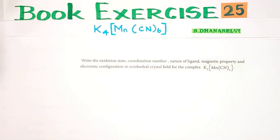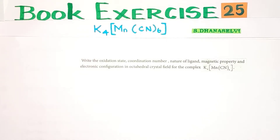The compound is K4Mn(CN)6, a coordination compound. We need to find: the central metal ion, oxidation state, coordination number, nature of the ligand, magnetic property, and electronic configuration in octahedral crystal field. Let's go through these points one by one.